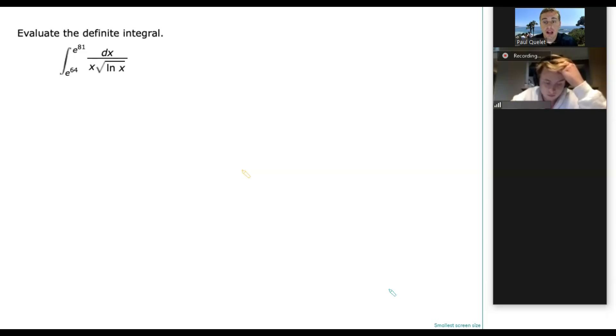So with a definite integral, we're not going to end up with a function. Our final answer is going to be a number, because it's like an area between two points. x1 is basically e to the 64th power, and then x2 is e to the 81st power.